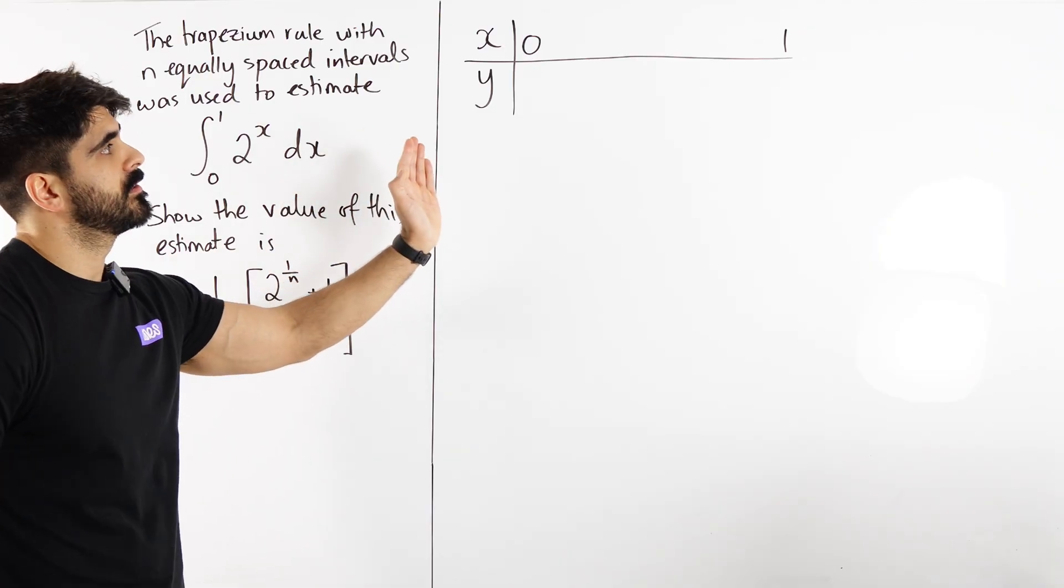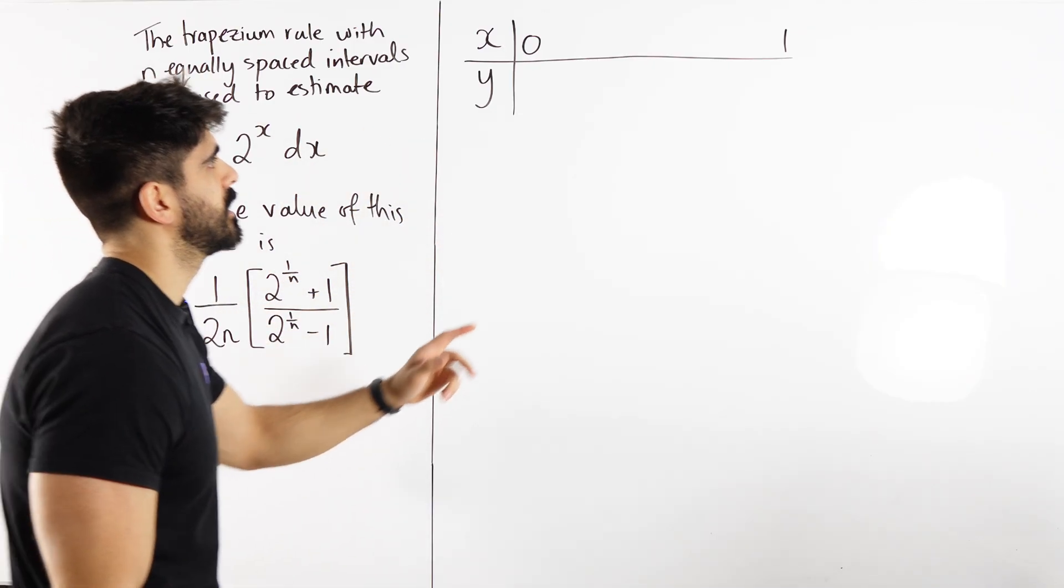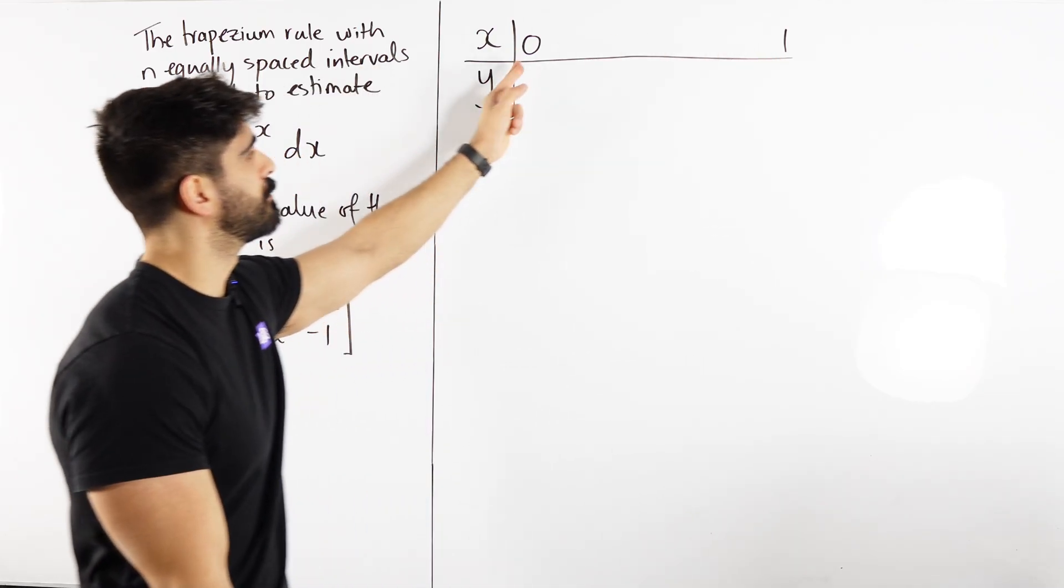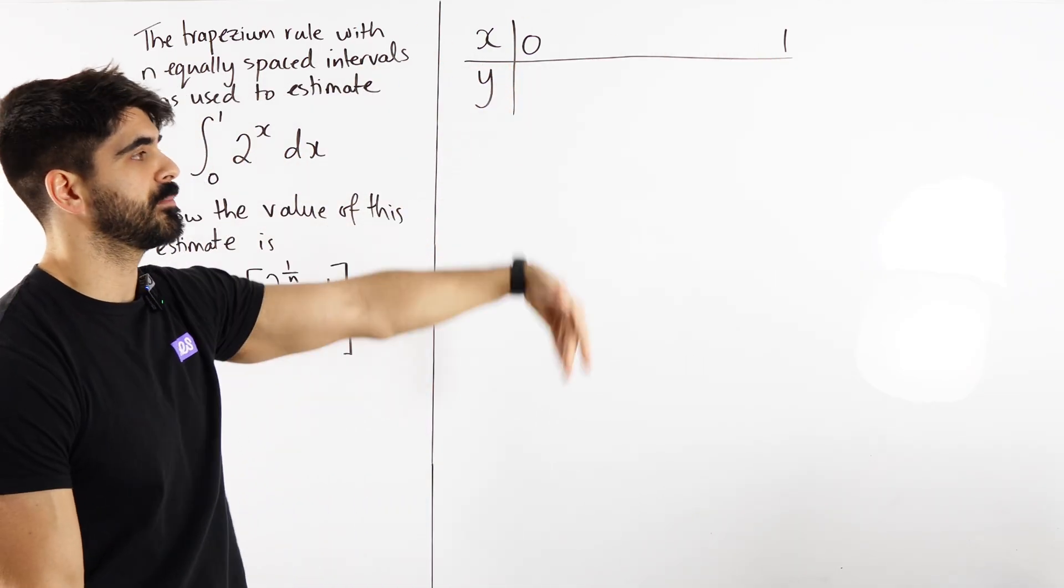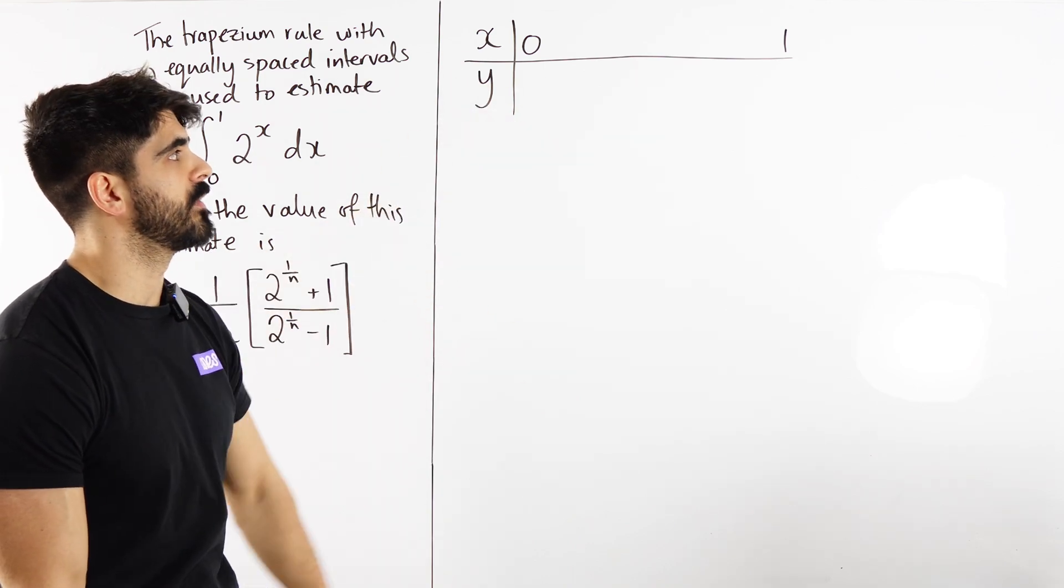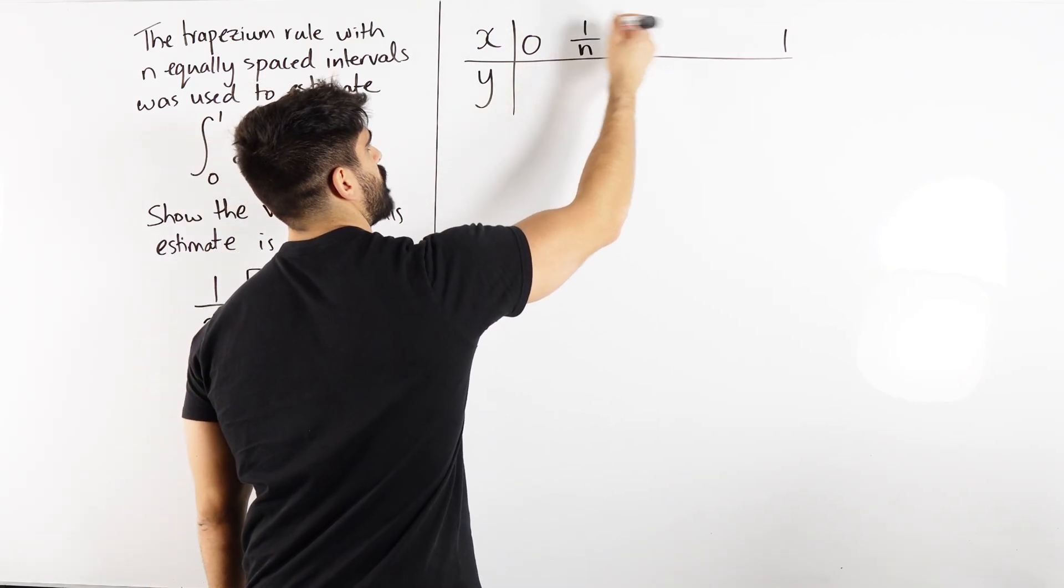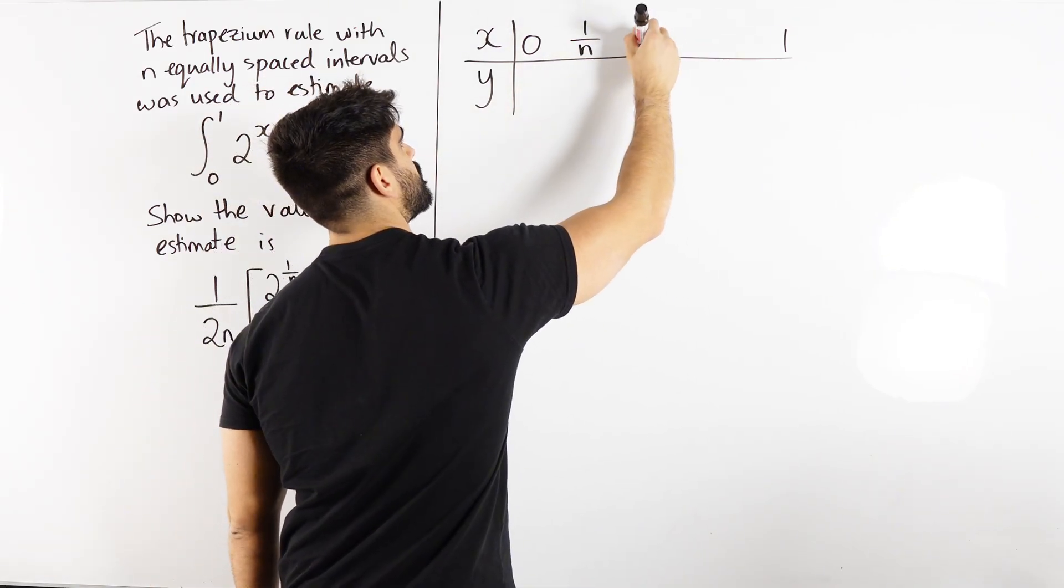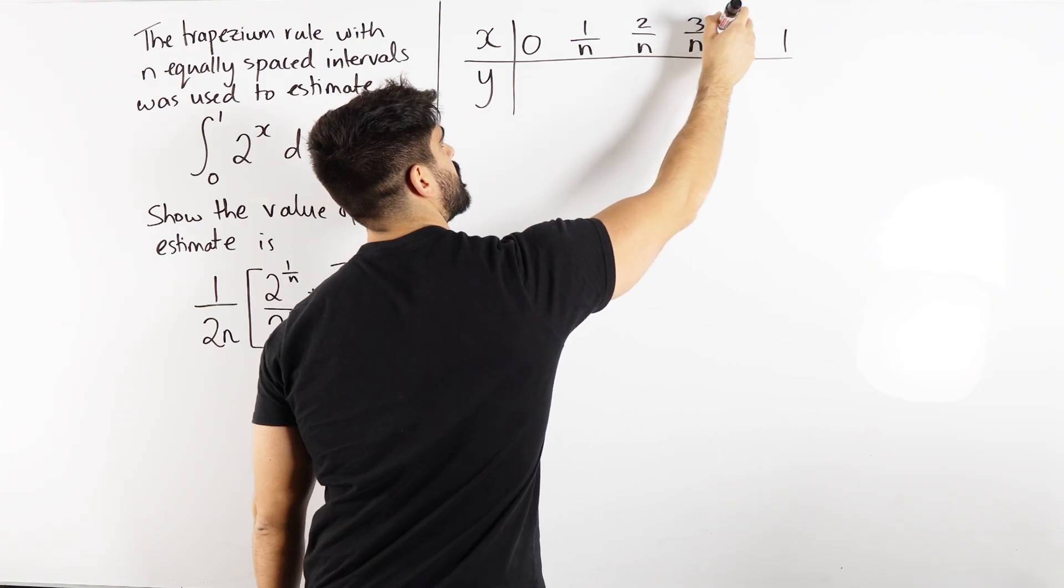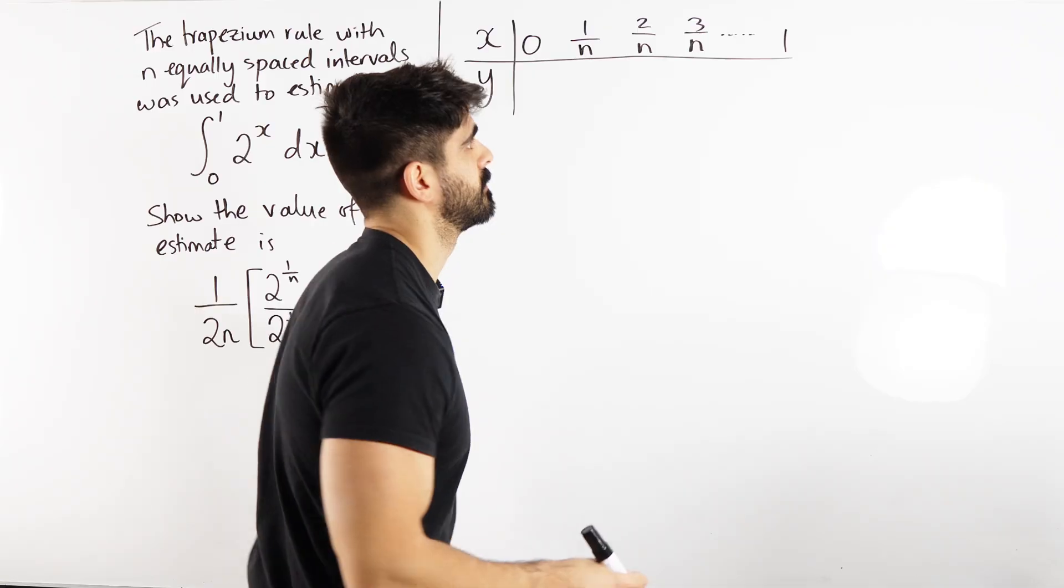Now how do we find the width of the trapeziums? Well all you do is you do the top limit minus the bottom limit and you divide by how many strips you're making. So you're doing 1 minus 0 is 1, then you're dividing by n, 1 over n. So we're going to have 1 over n, then you add 1 over n is 2 over n, 3 over n, all the way up to n over n.